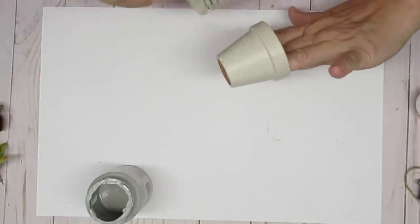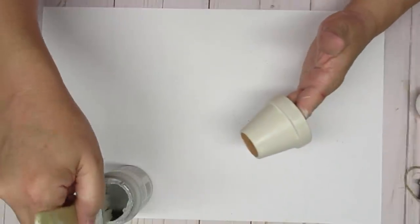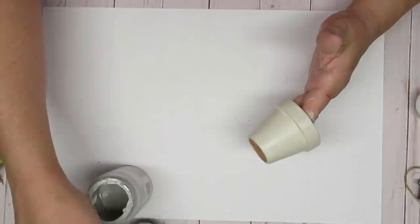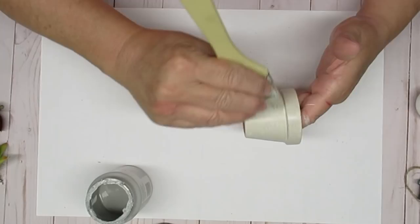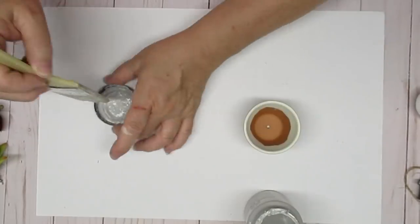This is sort of a mushroomy colored chalk paint that's on my brush but now I'm going to take some Parisian gray folk art chalk paint and do some dry brushing to give it a little bit more of a weathered look.